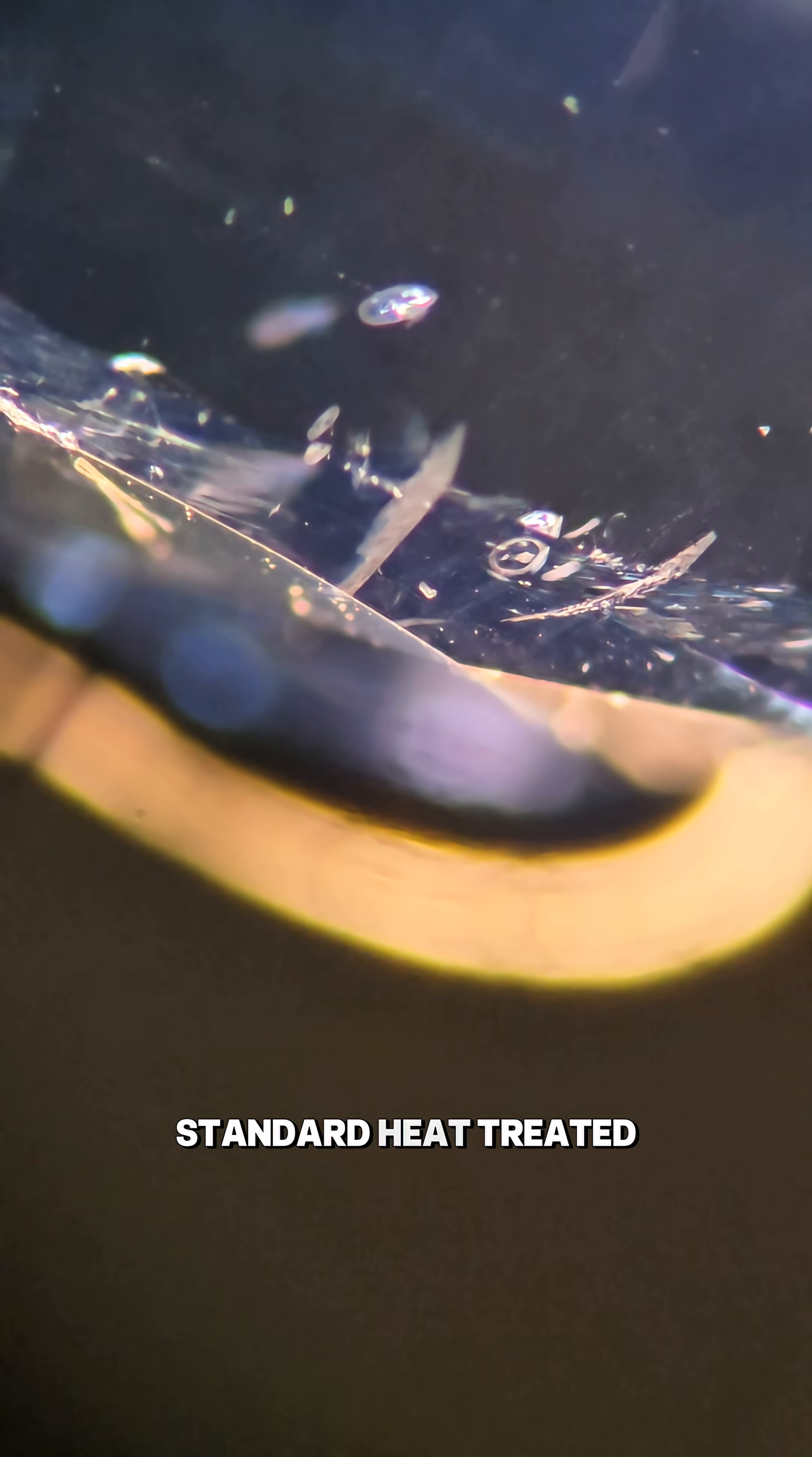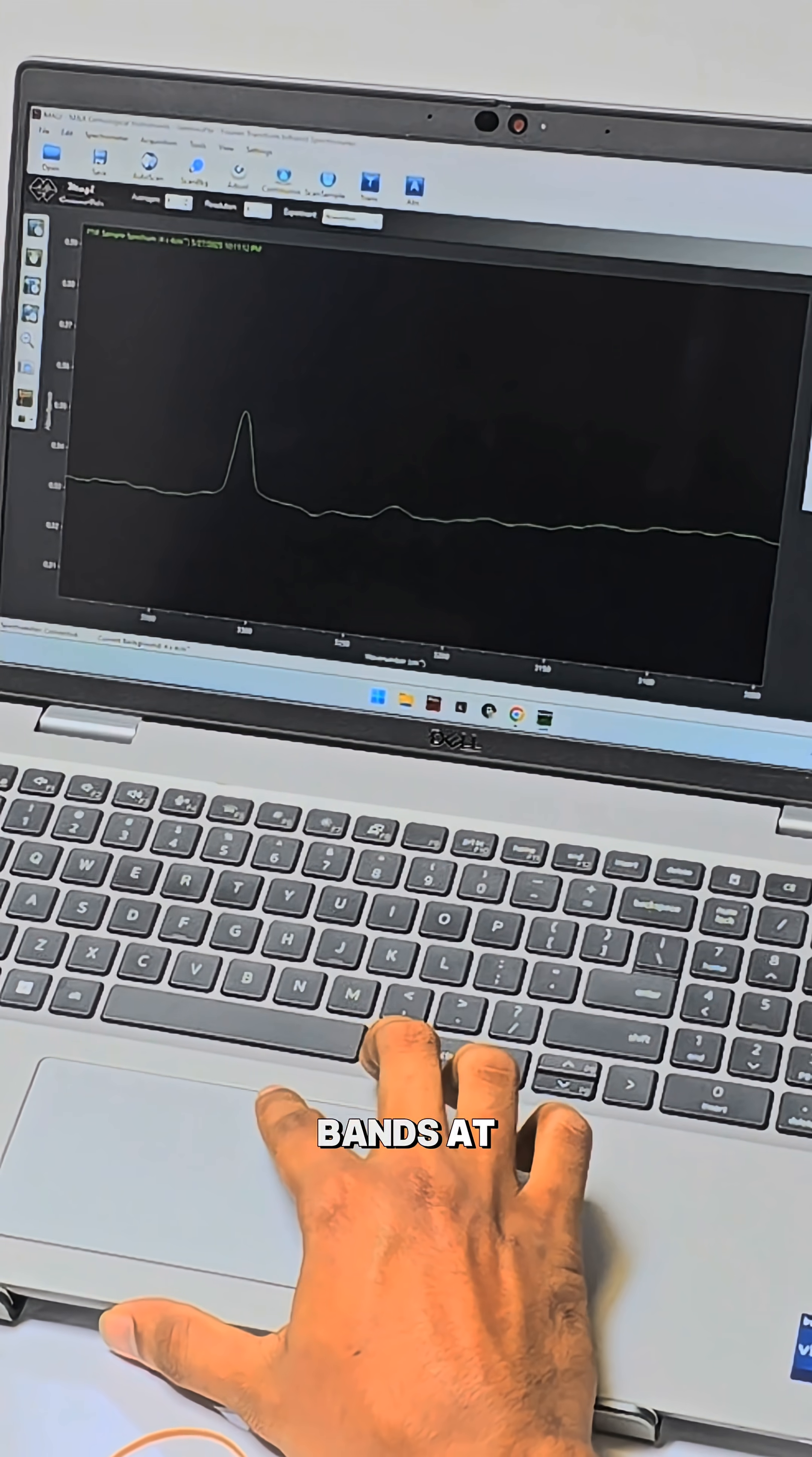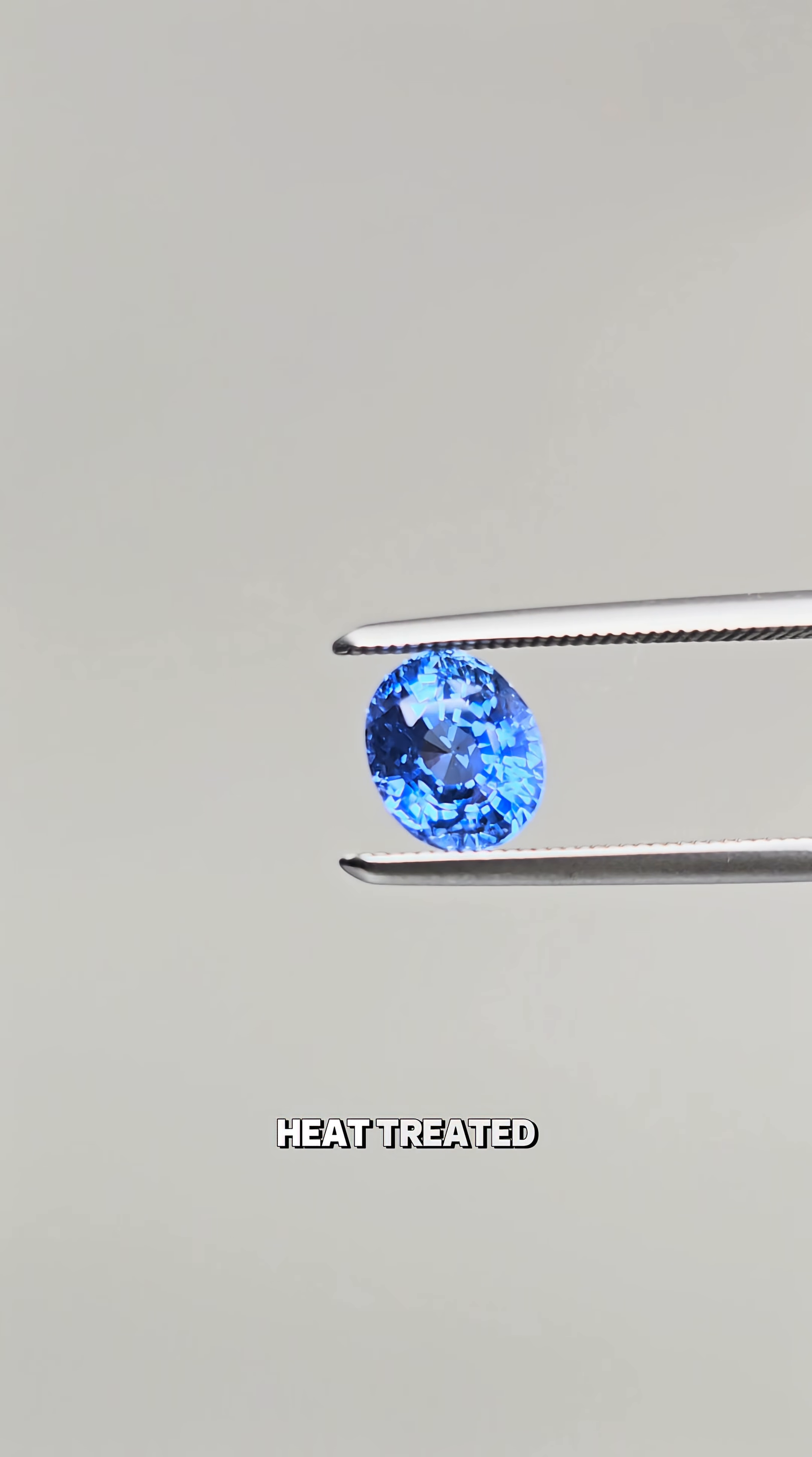To further confirm, I'm taking it to the FTIR spectroscopy. I'm seeing absorption bands at 3309, 3232, and 3185 wave numbers. This series strongly indicates heat treatment. Natural blue sapphire: heat treated.